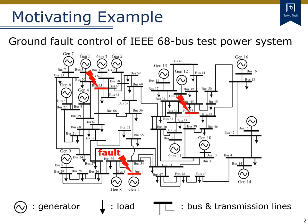First, I show a motivating example of power systems control. In particular, we consider the ground fault control of the IEEE 68 bus test power system. In this figure, the circles represent the generators, the arrows represent the loads, the black bars represent the buses, and the thin lines represent the transmission lines connecting these buses. As an external disturbance to this system, we consider ground faults on the buses, like these red marks.